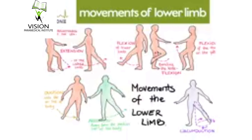Flexion of the knee: when the back of the thigh and the back of the leg come into opposition, it is called flexion of the knee. Extension is the opposite: when the thigh and leg are in a straight line, it is called extension of the knee. Now, movements at the ankle joint. Dorsiflexion: when the dorsum of the foot is brought close to the front of the leg, it is called dorsiflexion of the foot. The opposite is plantar flexion: when the sole or plantar aspect of the foot faces backwards, it is called plantar flexion.